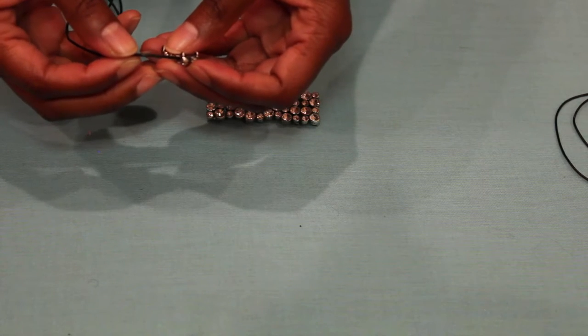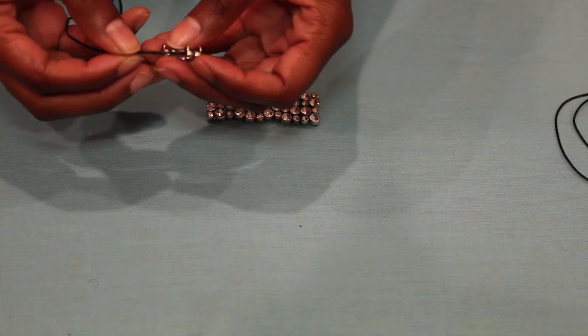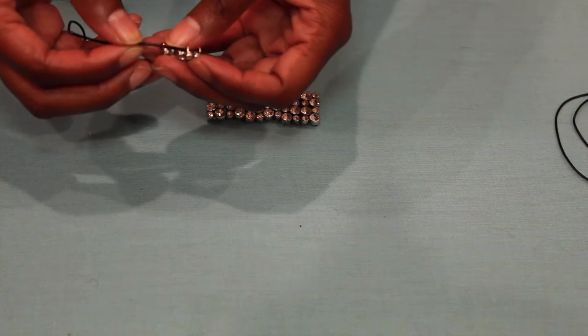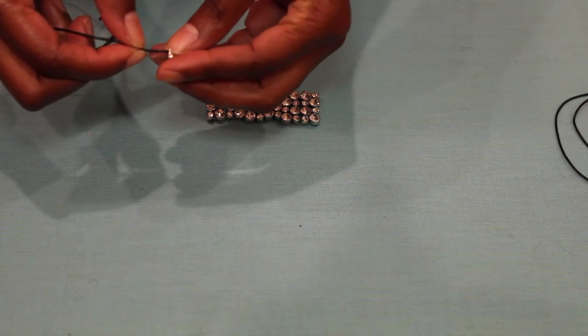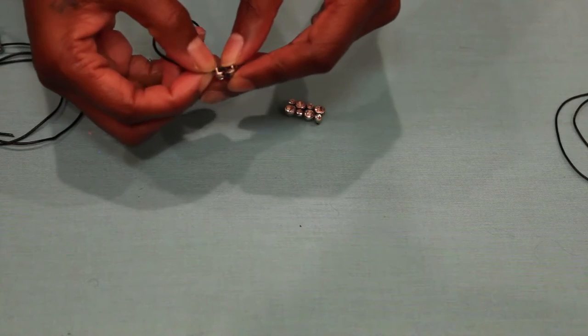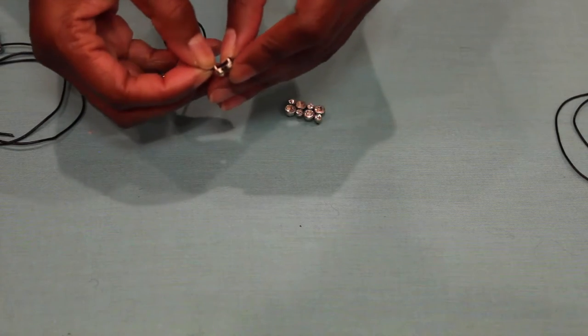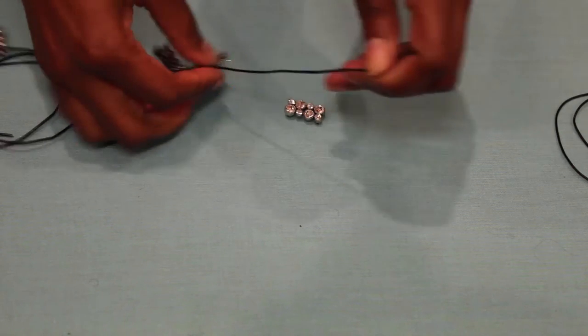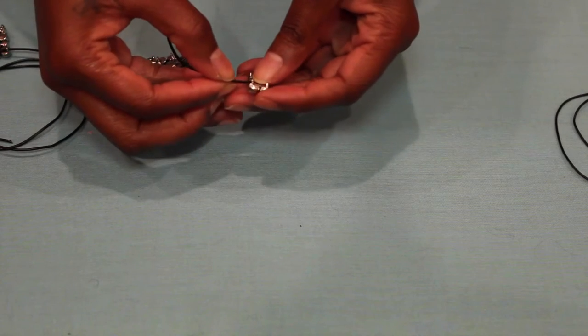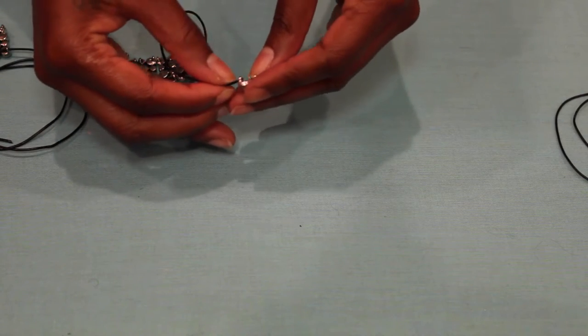After you cut your cording, you're just going to go ahead and thread it through the holes on the top of your beads. Each of the beads has two holes on top and two on the bottom. So like I said, I'm just going to go ahead and thread the top holes right now.